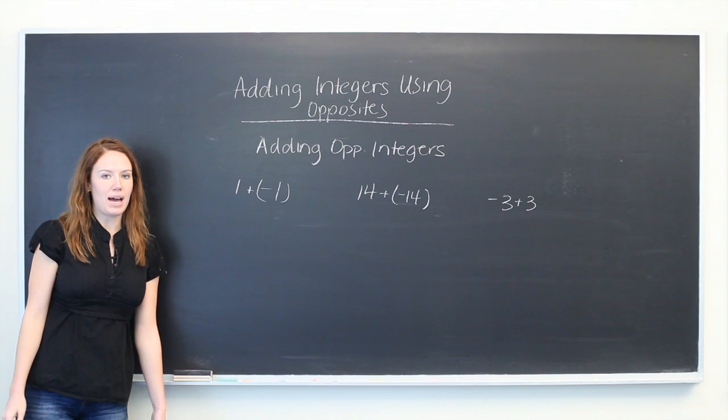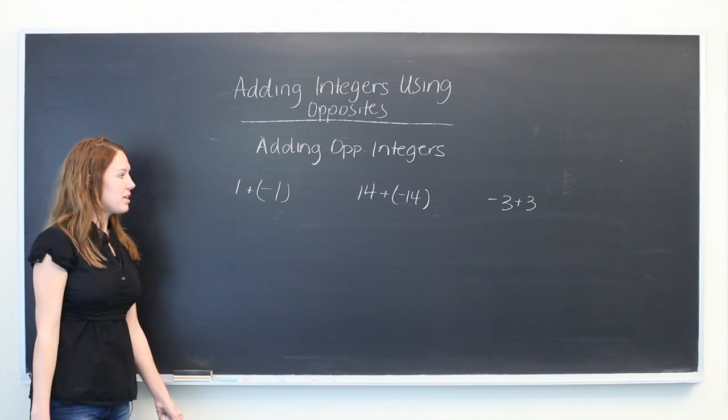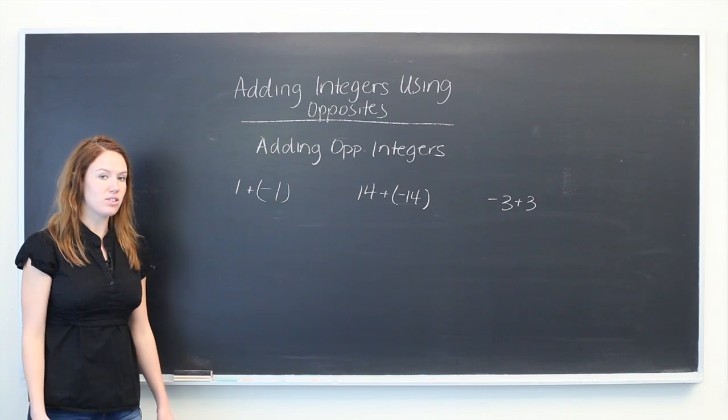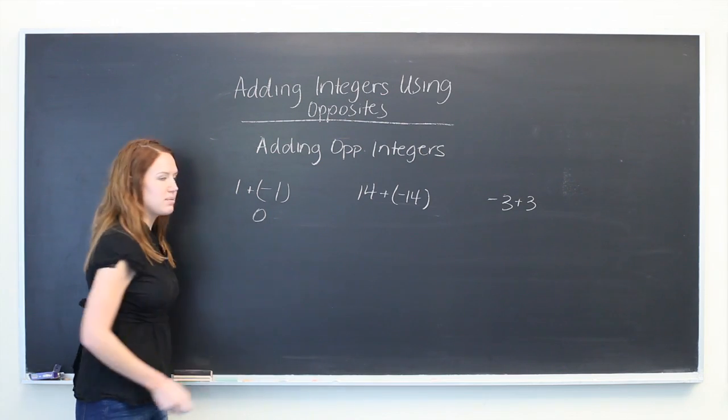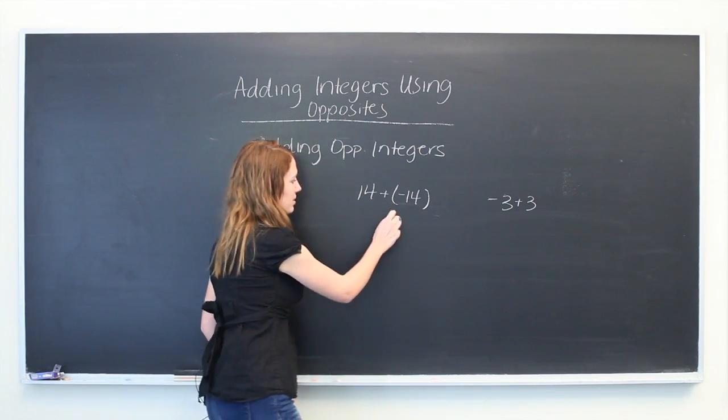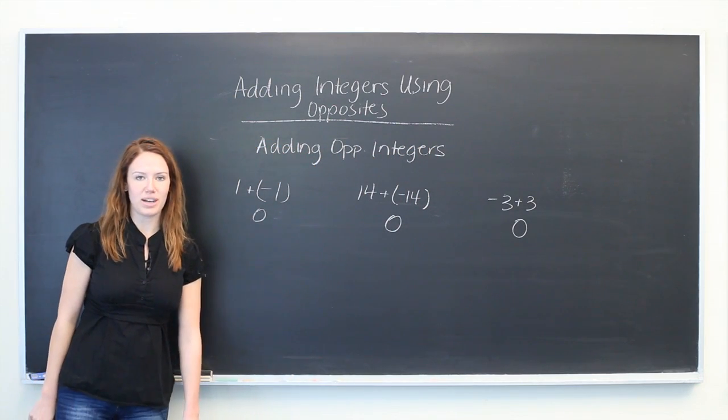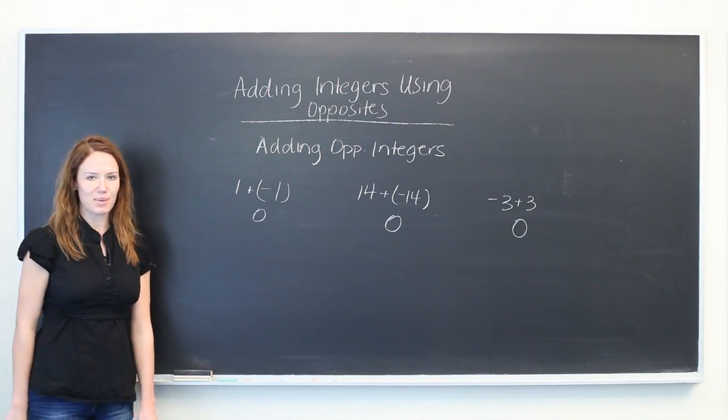And we see when you add opposite integers that the sum is always going to be the same thing, and it's always going to be zero. So again, when you add opposite integers, you're always going to have a sum of zero. Thanks for watching.